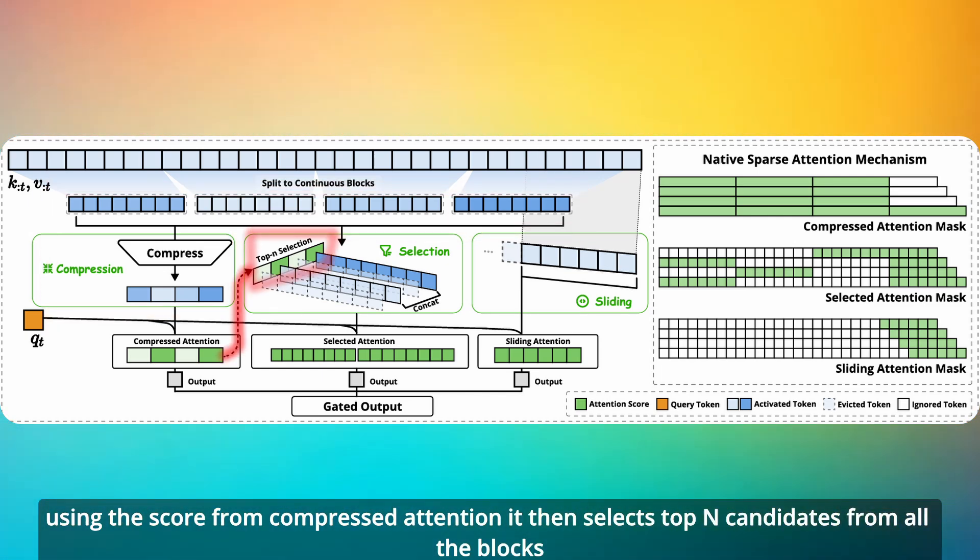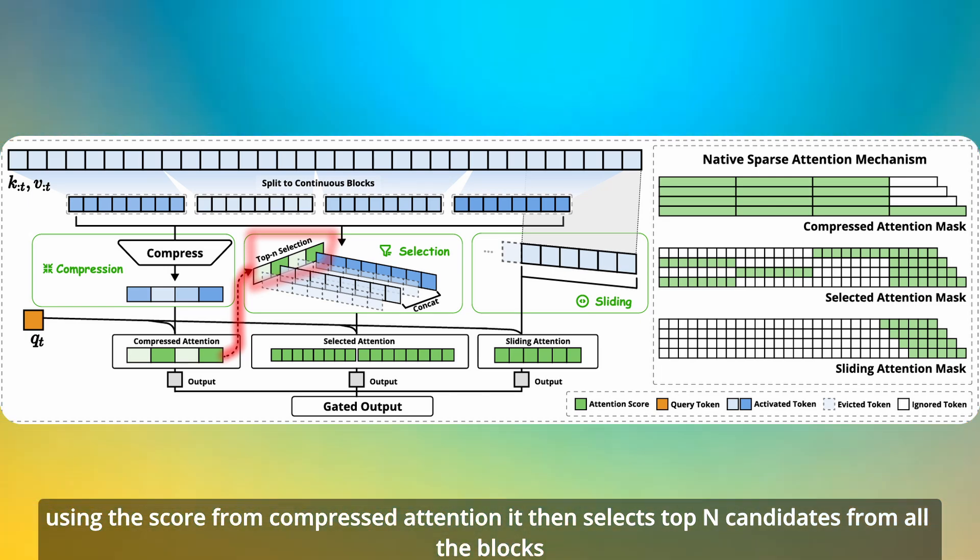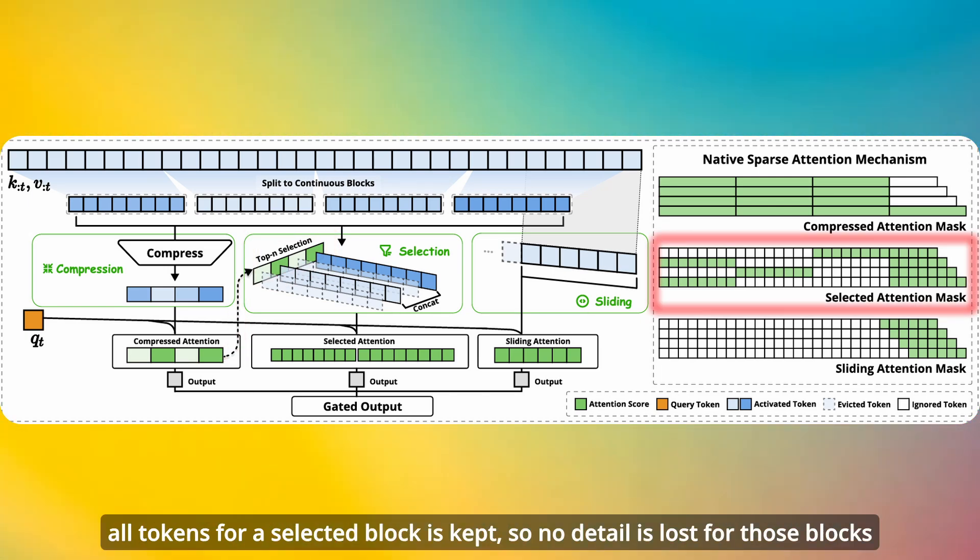Using the score from compressed attention, it then selects top candidates from all the blocks. All tokens for a selected block are kept, so no detail is lost for those blocks.